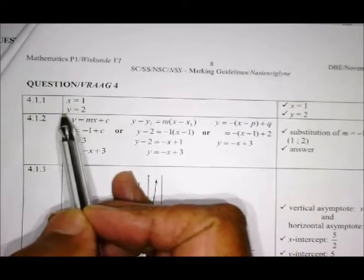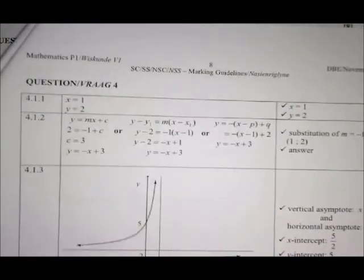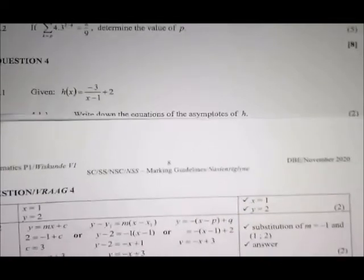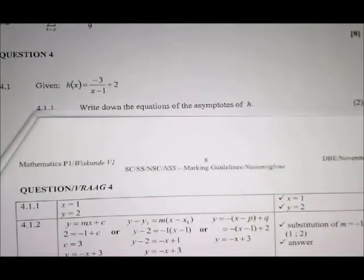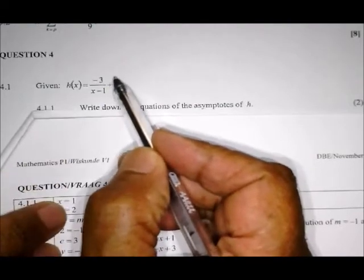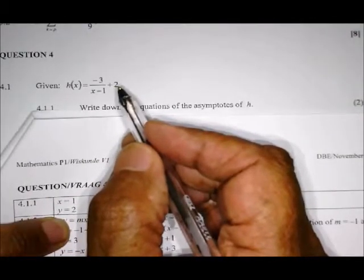Remember, if it's x minus 1, then the asymptote will be x = 1. This value here doesn't change; it represents the vertical asymptote. And the plus 2 represents the horizontal asymptote.